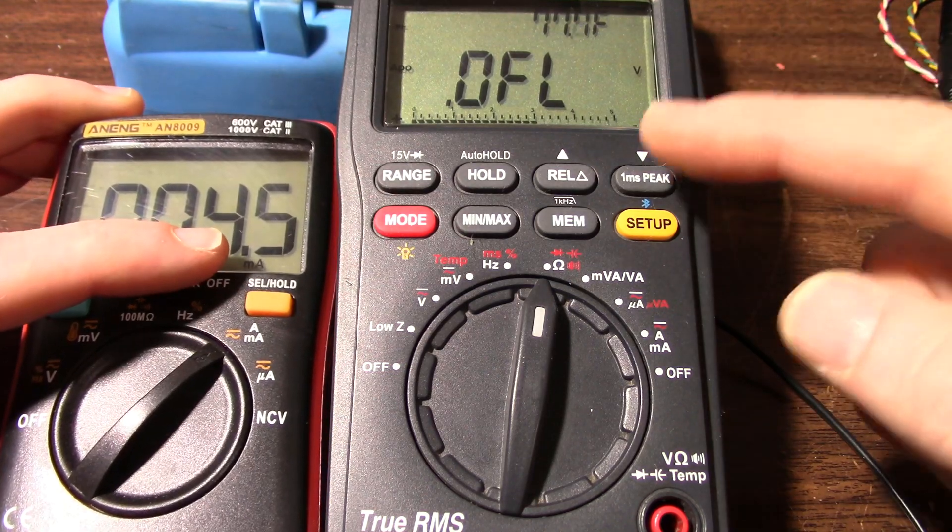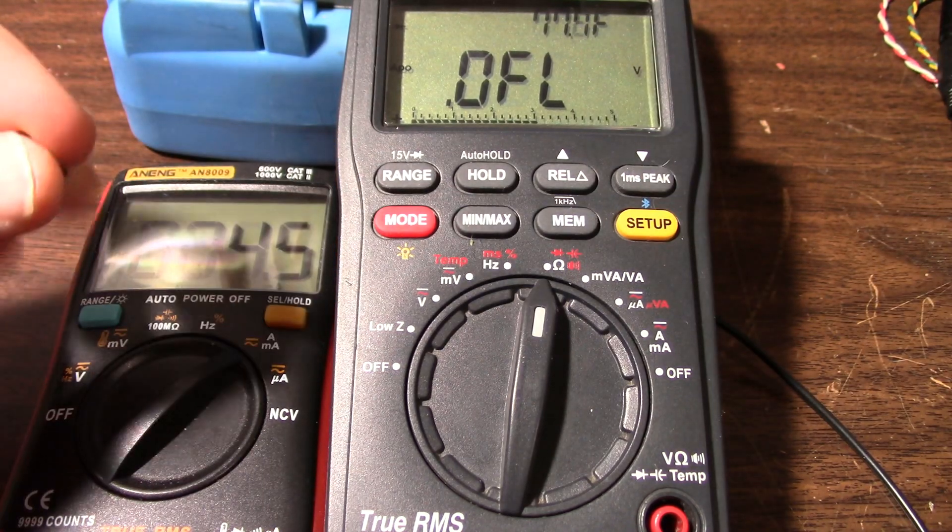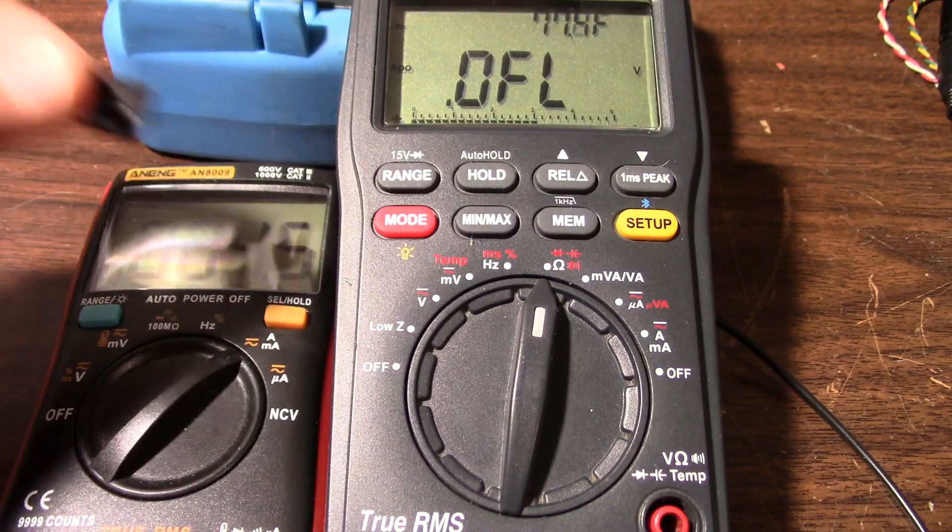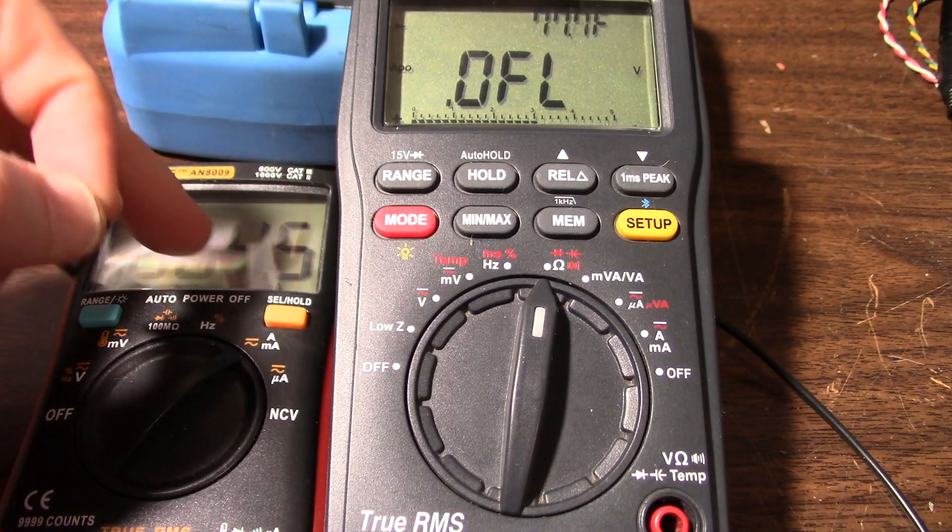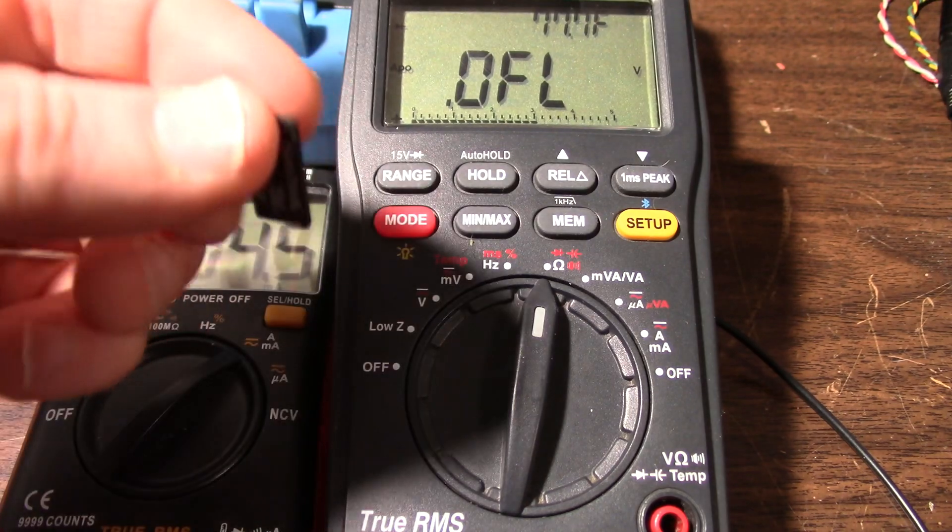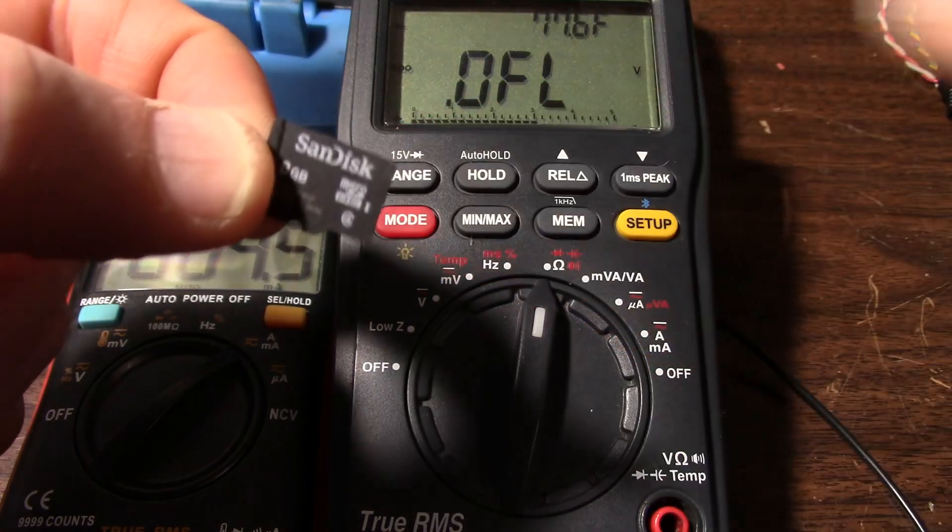Another thing I noticed: now that it's on without the card installed, it's drawing a couple milliamps less. So the card reader function in this thing causes it to draw extra current, probably powering the controller chip inside this memory card.